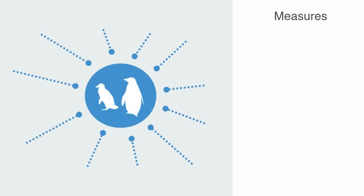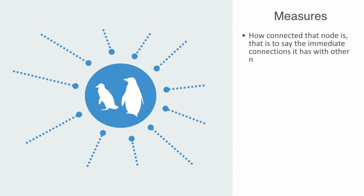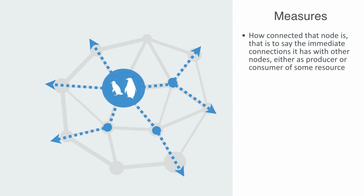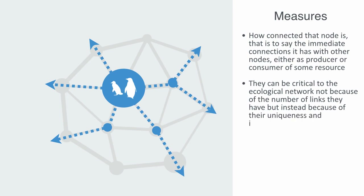The centrality of a node within an ecological network is quite a complex metric to define. It is a product of factors such as how connected that node is — its immediate connections as a predator or consumer. We also need to consider how critical the creature is to the network: does it serve some role that no other node could perform? Such species form what we call a bridging link. Without redundant components to fill their role, they can be critical not because of the number of links or population size, but because of their uniqueness and irreplaceability.